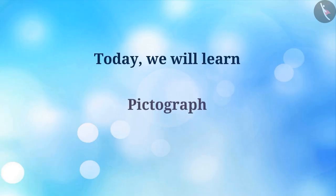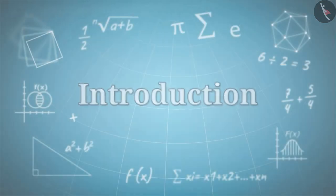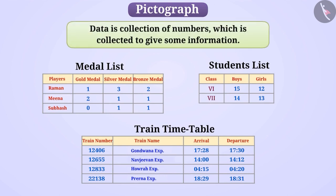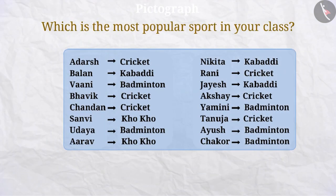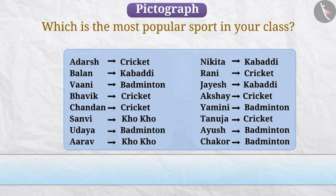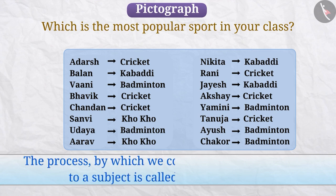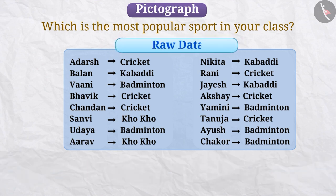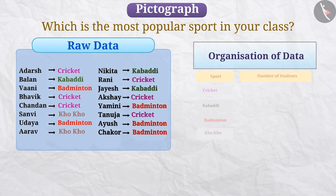Today we will learn about pictograph. In the previous video, we learnt that data are collection of numbers which are collected to give some information. The process by which we collect information related to a subject is called data recording. It is not easy to draw any conclusions from the information collected in the form of raw data. Therefore, we go for organization of data.